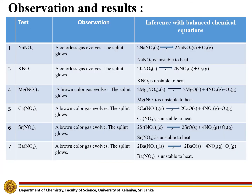Observation and results: When we heat sodium nitrate, a colourless gas evolves and the splint glows, meaning the emitted gas is oxygen. So, sodium nitrate is unstable to heat. Furthermore, when we heat potassium nitrate, a colourless gas evolves and the splint glows. So, potassium nitrate will dissociate and produce oxygen, meaning potassium nitrate is also unstable to heat.